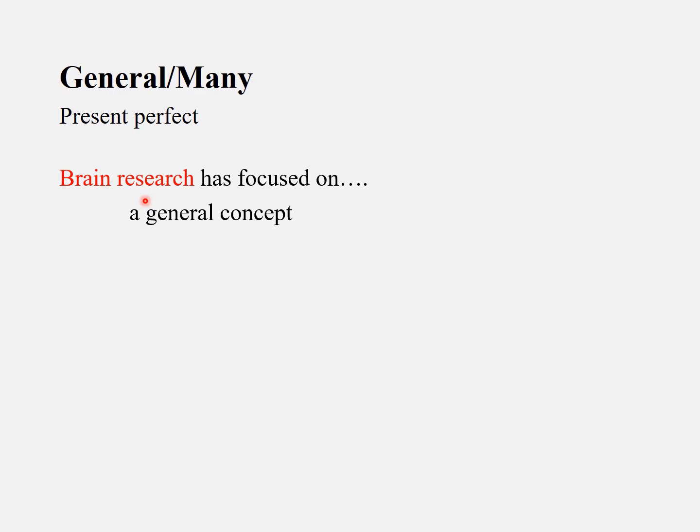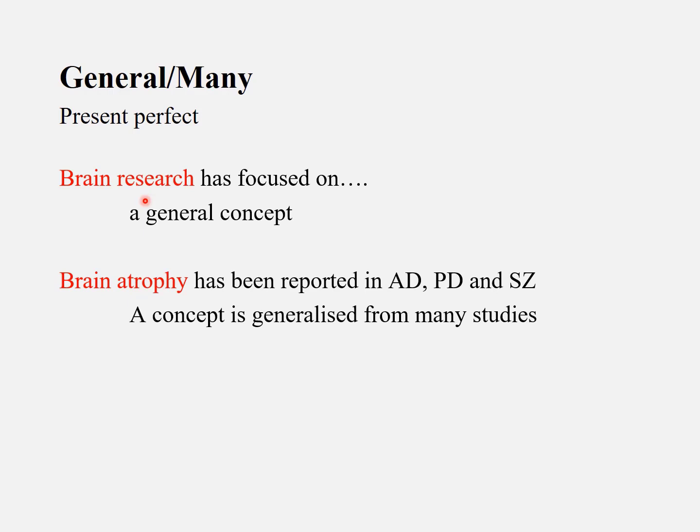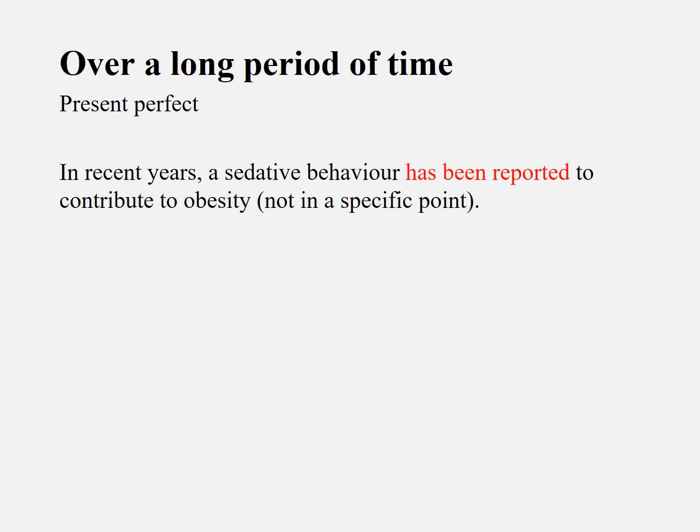This will depend on that particular sentence. When the sentence is talking about brand research as a general concept — very general — you will need to use the present perfect tense. When you say 'brain atrophy has been reported in Alzheimer's disease, Parkinson's disease, and schizophrenia,' this is a concept reported across multiple contexts, so you use the present perfect tense.